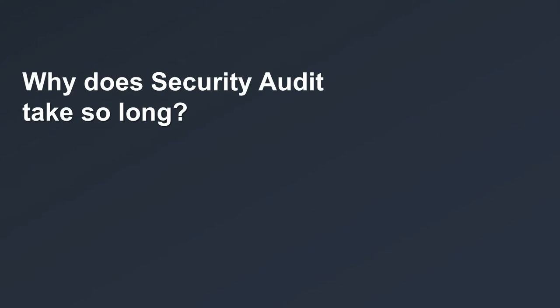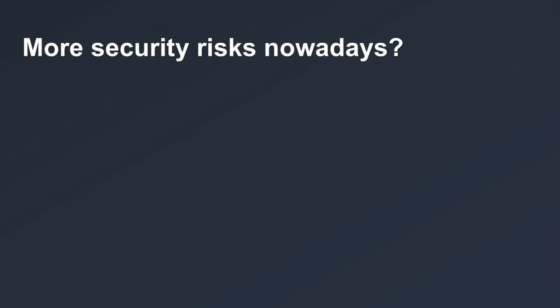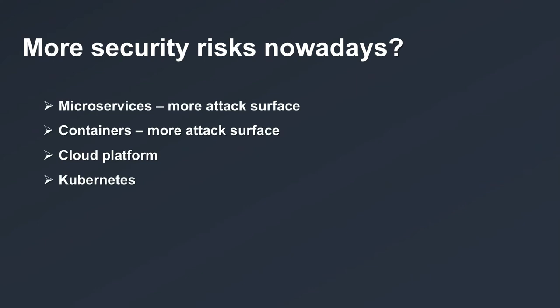To understand why security is a bottleneck, think about how applications have evolved. We have microservices now instead of one monolith application, and they expose APIs to communicate — which means a much larger attack surface. On top of that, we have tons of services which microservices use, like databases, message brokers, service mesh applications, and more — even more components and more attack surface.